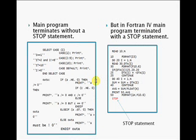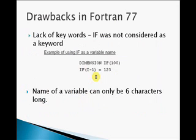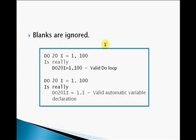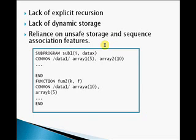In Fortran 77, the main program terminates without a stop statement, unlike in previous versions. Although Fortran 77 contained many additional features, there were drawbacks too. Lack of keywords is one of them — for example, if was not considered a keyword, which increased the possibility of programmers making mistakes. Another drawback is that a variable name could contain only six characters, decreasing program understandability. In Fortran 77, blanks were ignored. Lack of explicit recursion is another major drawback, as it does not support recursion, which is a very useful mathematical technique.